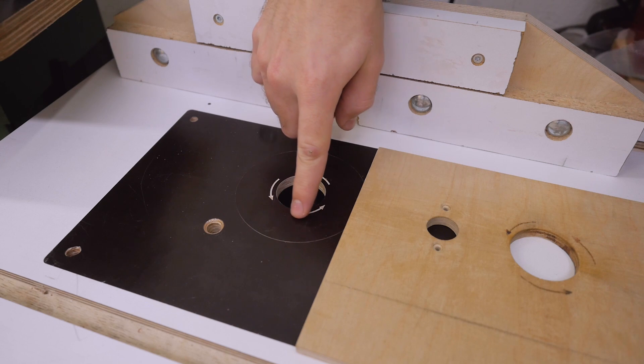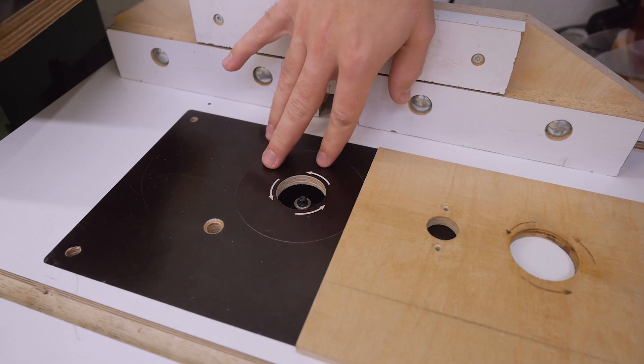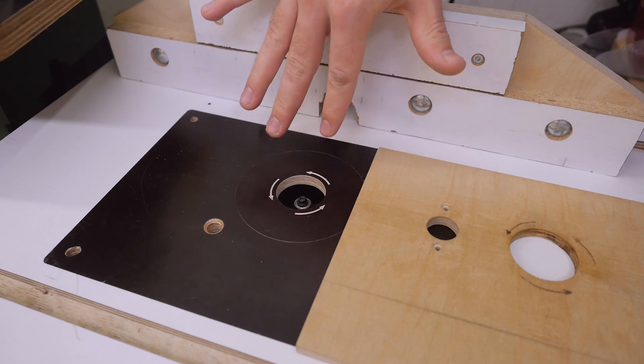One last thing: marking the direction of the router bit is so useful. I did this on my old table as well and that often prevents feeding in the wrong direction.